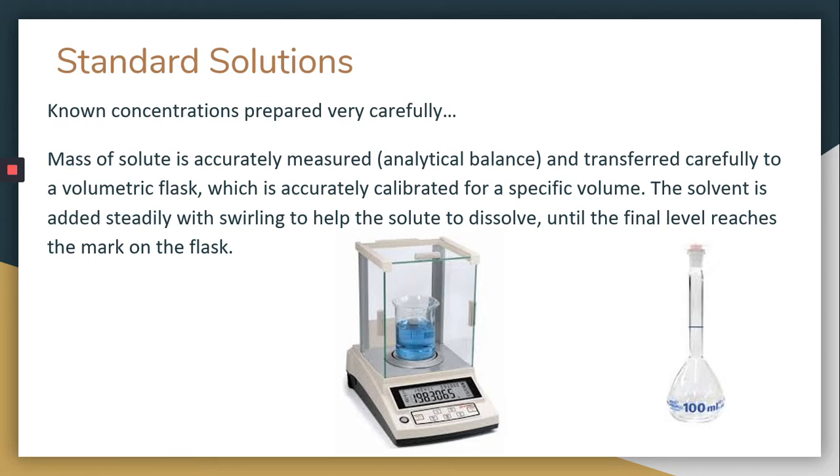So you measure out the solute, and then you carefully put it in a volumetric flask. A volumetric flask looks like this. It has a line that is for a specific volume. This picture is showing us 100 milliliters. So you would put some water in there, you would put your solid in there, and then you would slowly add some water, mixing it constantly. Once it's all dissolved, then you would add enough water to reach that exact line, and then you would have that precise volume and that mass, which you can convert to moles, and then you can find your concentration.